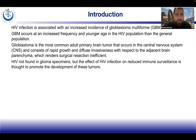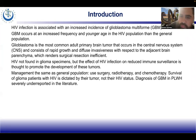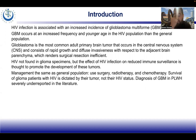HIV was not found in glioma specimens, but the effect of HIV infection on reduced immune surveillance is thought to promote the development of these tumors. Management of the tumor is the same as the general population — surgery, radiotherapy, and chemotherapy — and the survival of glioma patients with HIV is dictated by their tumor, not their HIV status. The diagnosis of GBM in people living with HIV is severely underreported in the literature.